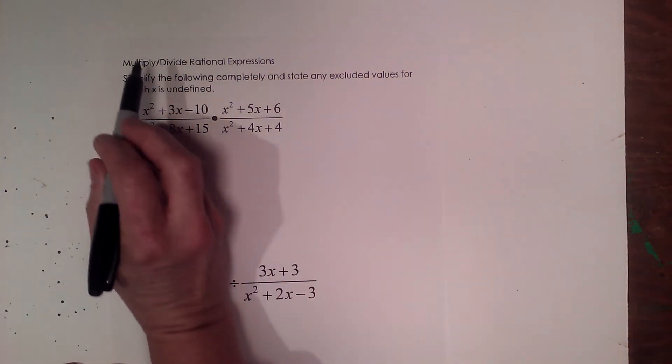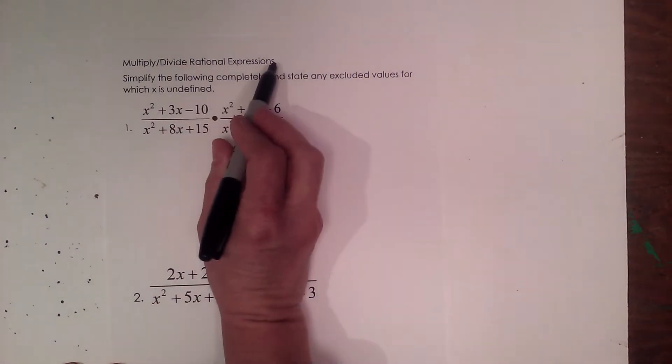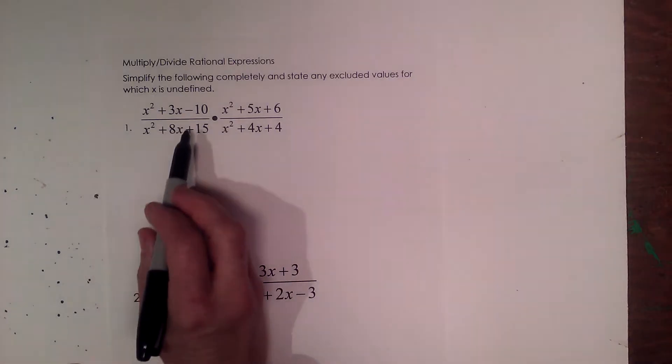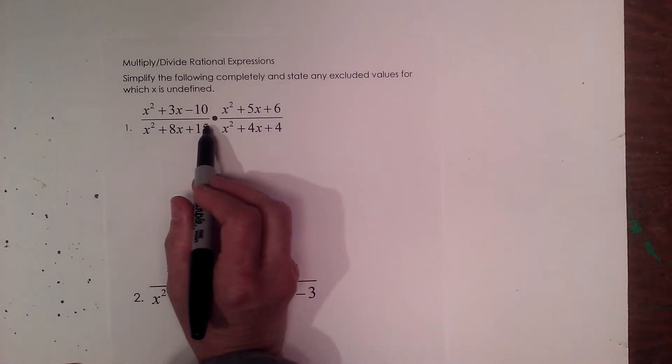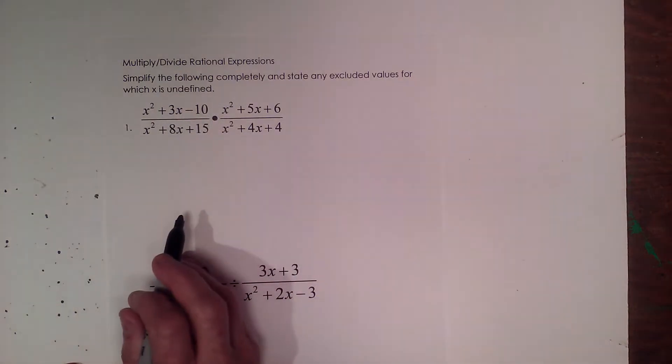Welcome to MooMoo Maths. Today we're going to talk about how to multiply and divide rational expressions. So what's a rational expression? It is an expression that has variables in the denominator of a fraction.